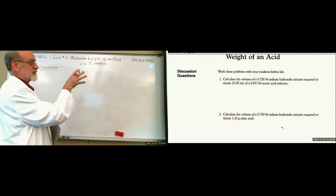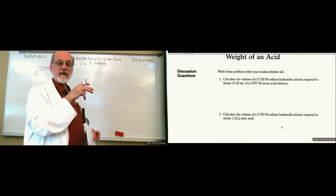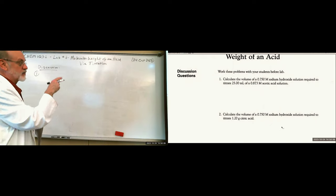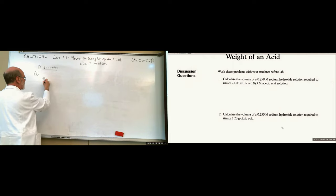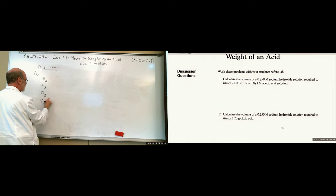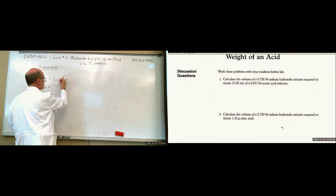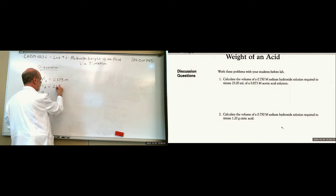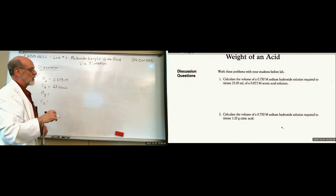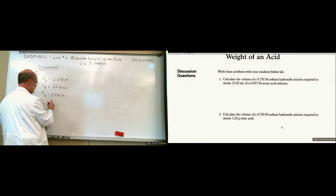In this case we're given the value for sodium hydroxide concentration and we calculate the volume of sodium hydroxide required. Let's list our variables: molarity of acid is 0.873 molar, volume of acid is 25 milliliters, molarity of base is 0.750 molar, and volume of base is our unknown.